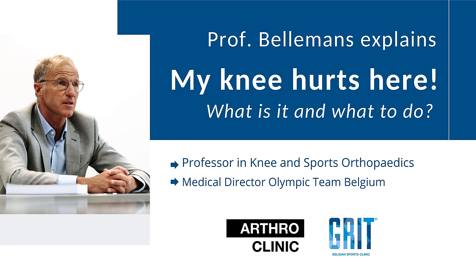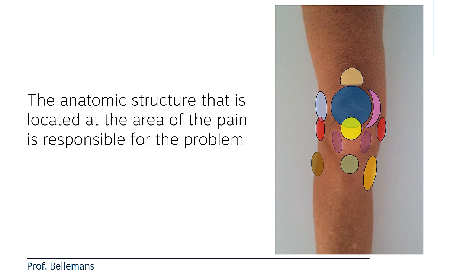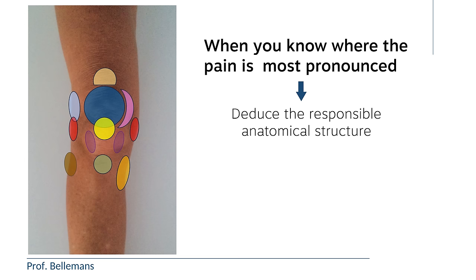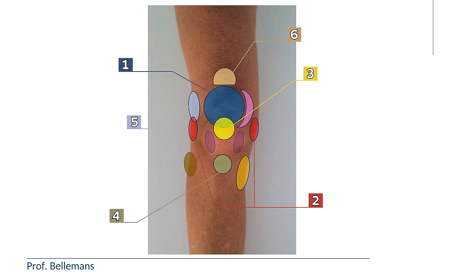The exact location of the pain is one of the most important factors when you want to know what is going on in your knee. Almost always, the anatomic structure located at the area of the pain is responsible for the problem. When you know where exactly the pain is most pronounced, you can relatively easily deduce which anatomic structure is responsible and come to the most likely diagnosis and an appropriate action plan. In the next minutes, I will describe the 10 most common pain locations in the knee, what they precisely mean, and which treatment options there could be.